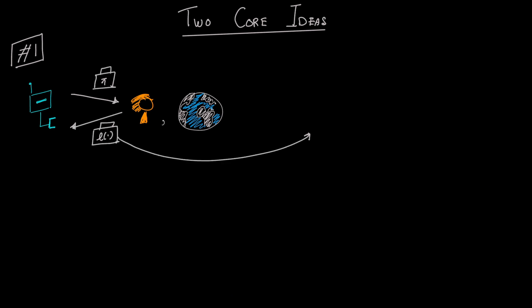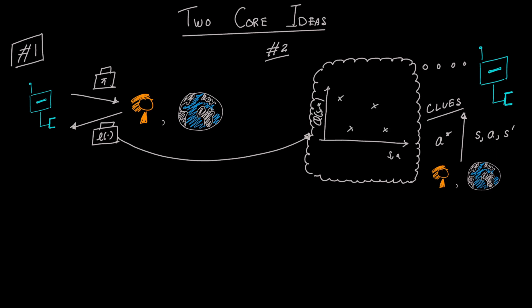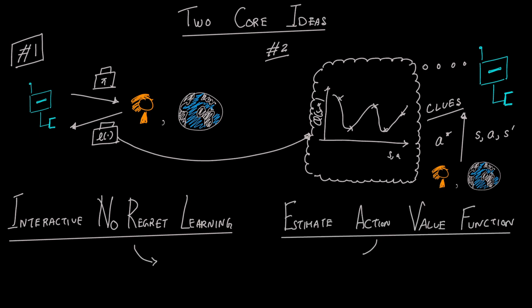So far, we talked about two core ideas. First, the robot must play an interactive learning game with the human and the world, where the robot plays a policy and receives a loss. Second, to construct this loss, the robot receives clues about the optimal value function which it pieces together to estimate it. Turns out, both of these ideas, interactive no-regret learning and estimation of the value function can be understood in a single unified game theoretic framework. This game is a min-max game between the robot policy and a value function estimator.